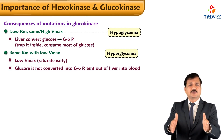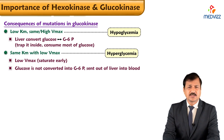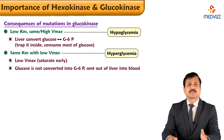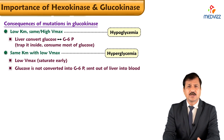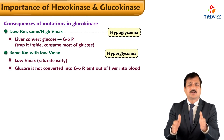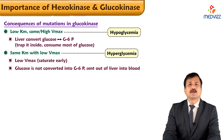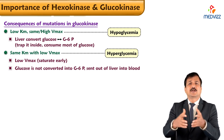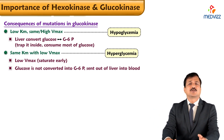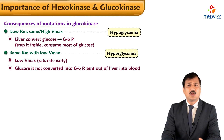This is all about the importance of the glucokinase and hexokinase reactions. I hope this video has helped you understand this very important concept — the very first reaction in the conversion of glucose into glucose-6-phosphate and diverting it into all other metabolic reactions. Thank you for watching.